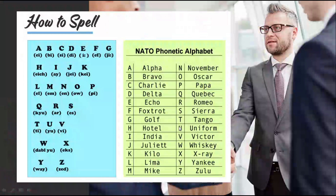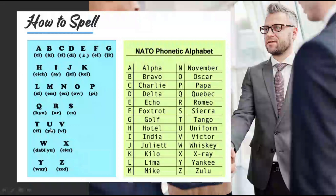Bagaimana sih cara spelling? Tentunya kalian dari SD sudah belajar cara spelling bahasa Inggris. Masih inget dong: A, B, C, D, E, F, G, H, I, J, K, L, M, N, O, P, Q, R, S, T, U, V, W, X, Y, Z. Ini harus hafal cara spelling.